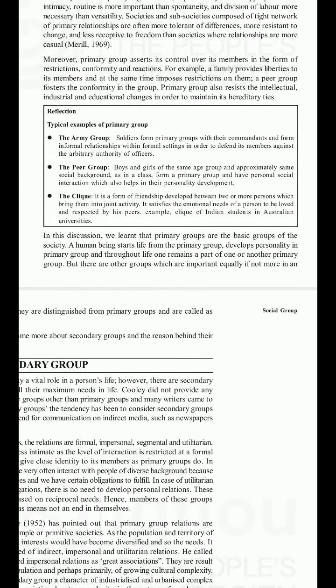Typical examples of primary groups: First, the army group — soldiers form primary groups with their commandants and form informal relationships within formal settings to defend members against arbitrary authority of officials. Second, the peer group — boys and girls of the same age group and approximately same social background, as in a class, form a primary group with personal social interaction which also helps in personality development. Third, the clique — a form of friendship between two or more persons which brings them into joint activity, satisfying emotional needs.